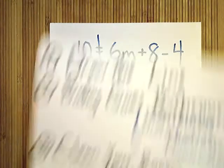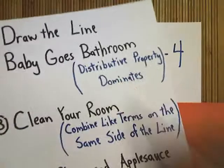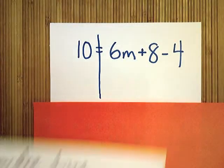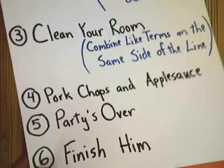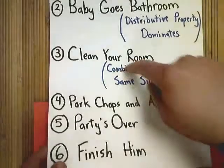The second step would be baby goes bathroom, but you see there's no distributive property, so no need to worry about that. The third step would be clean your room. That's the one we're going to focus on today.